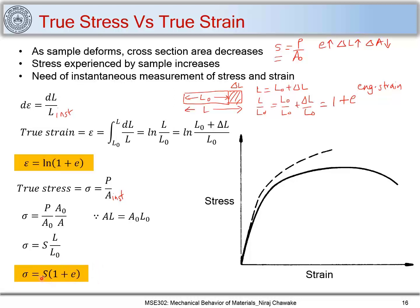From the equation σ = S(1 + e), for tensile deformation e remains positive, so true stress is always higher than engineering stress. The true stress–true strain curve shifts towards the left relative to the engineering curve. The σ versus ε curve is also called the flow curve. This flow curve is plotted only up to the UTS point, where S is maximum, because the constancy of volume does not hold beyond UTS due to necking.